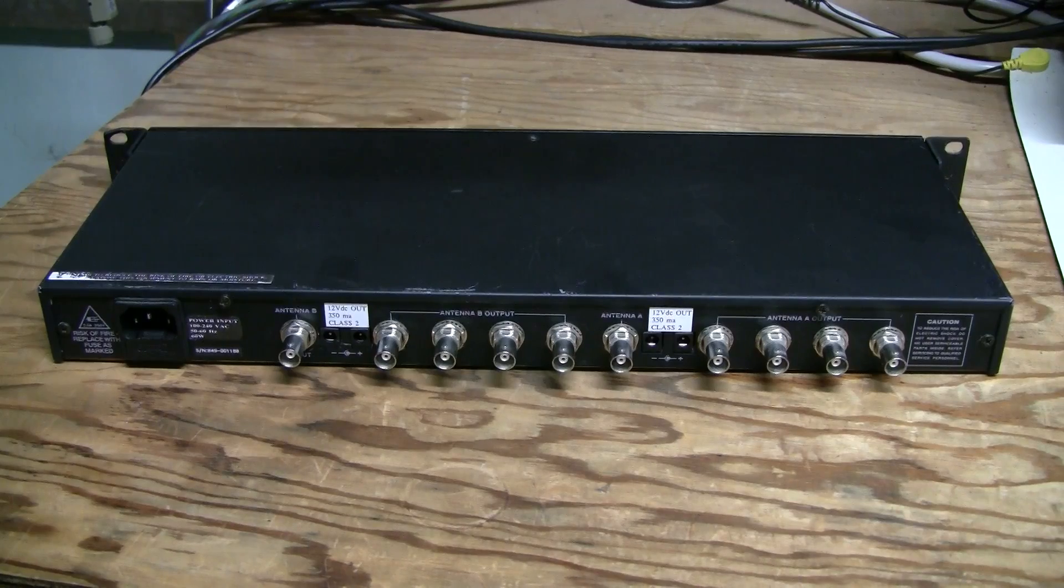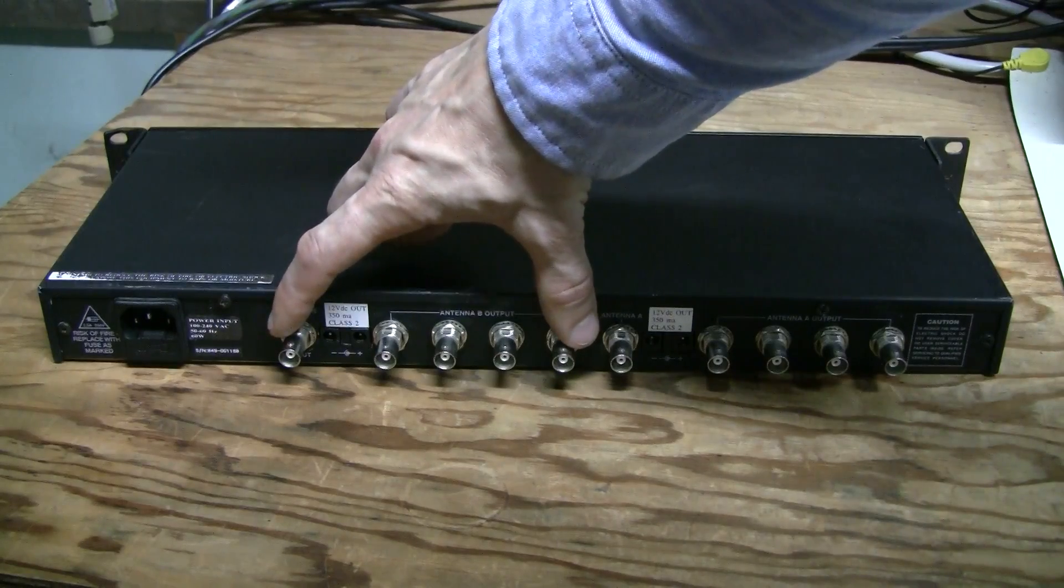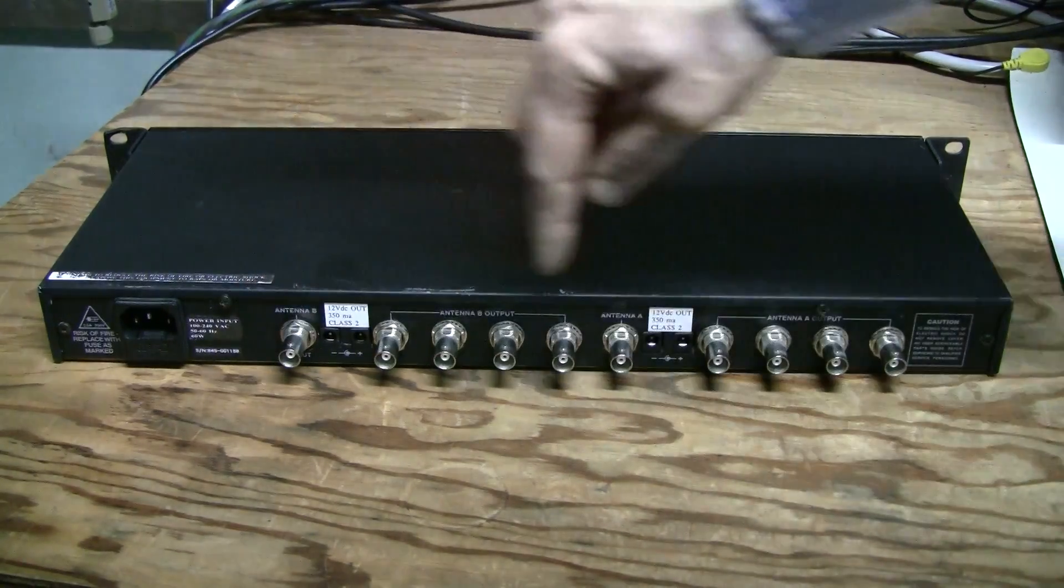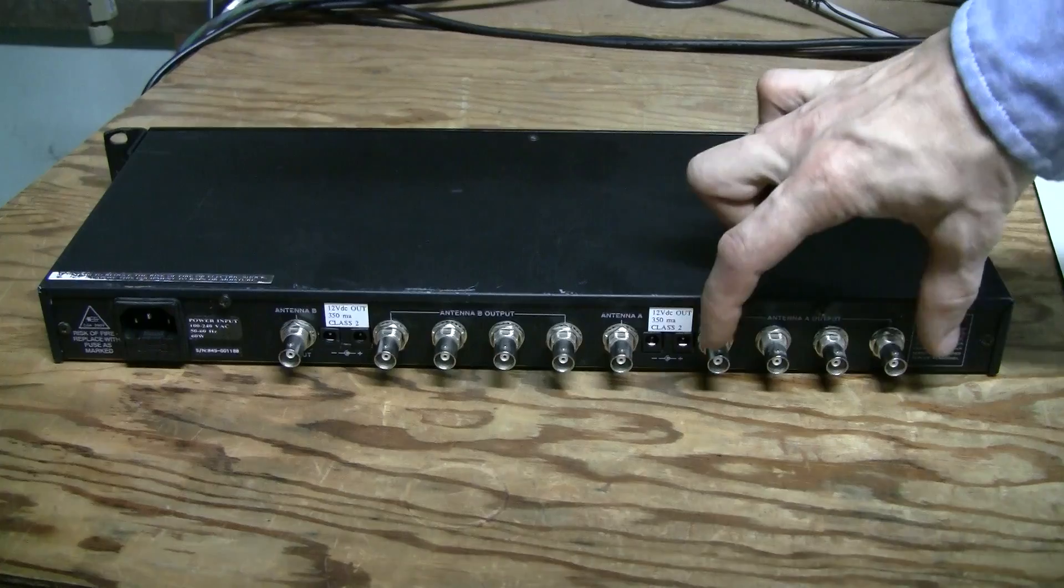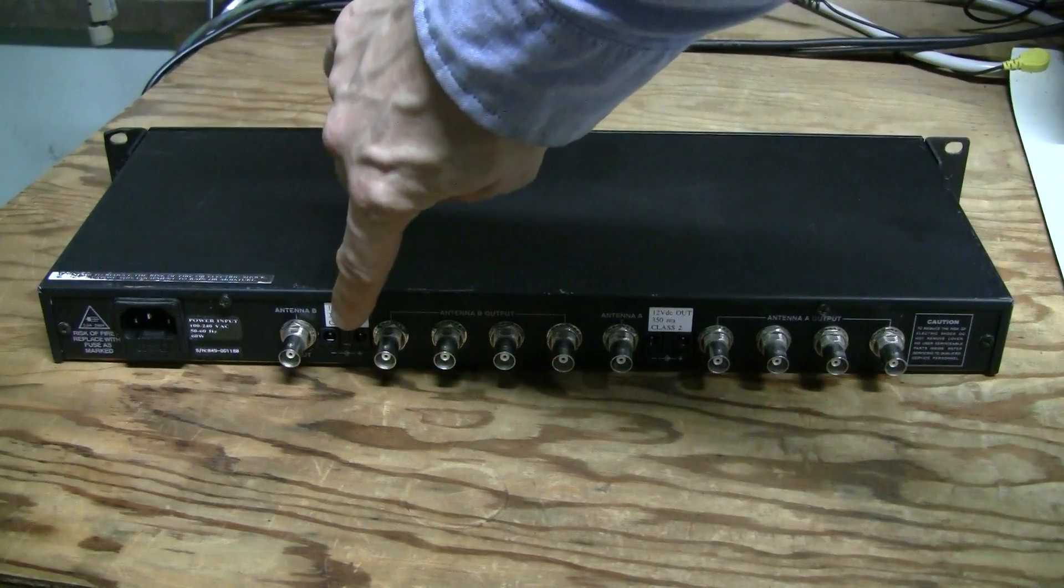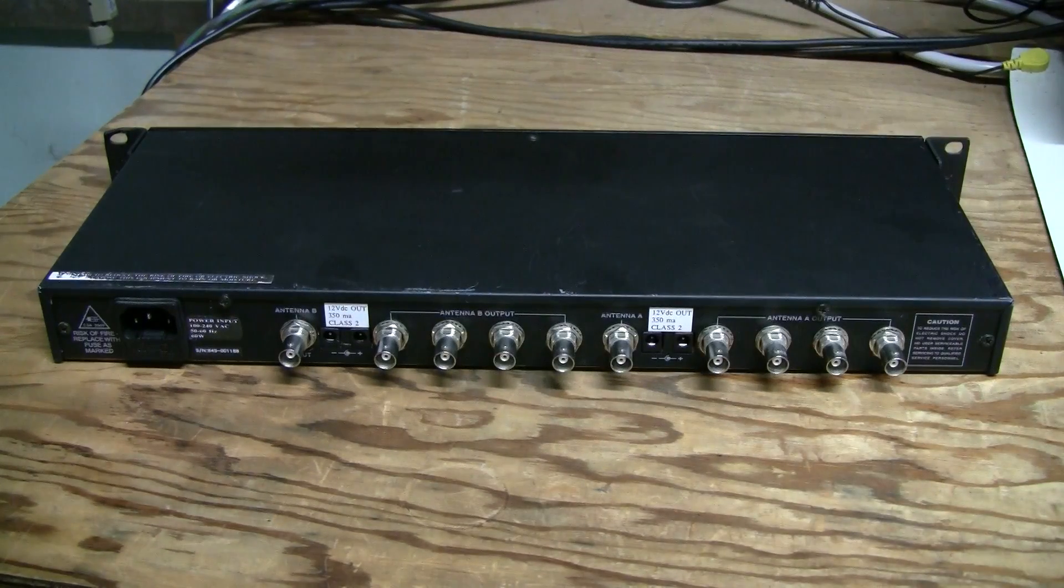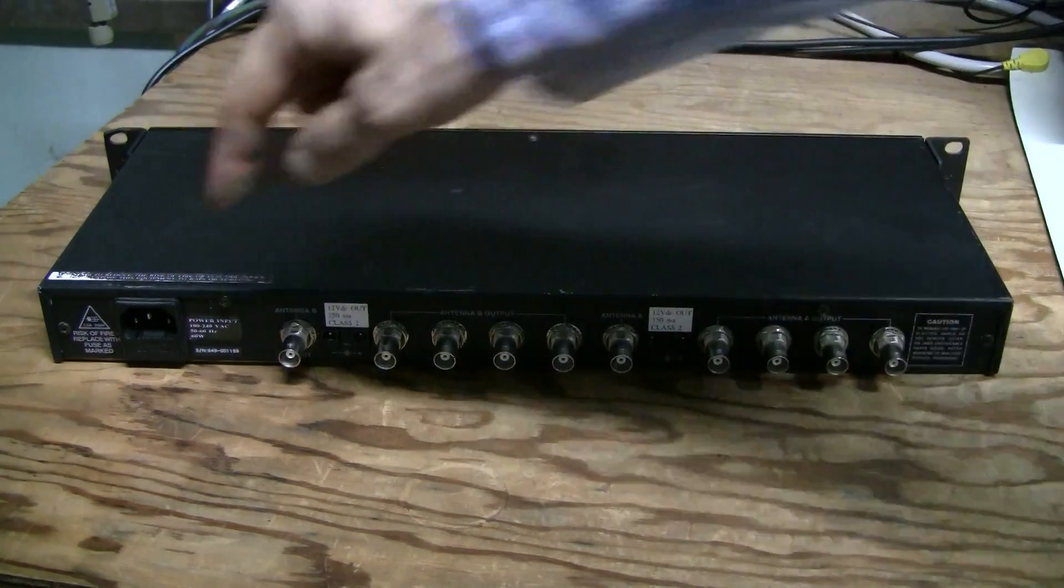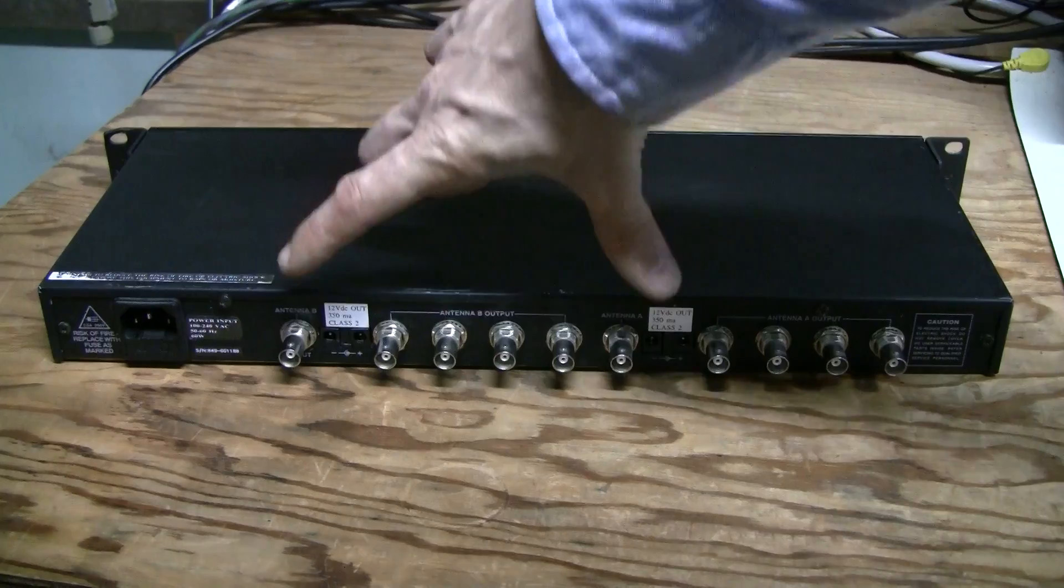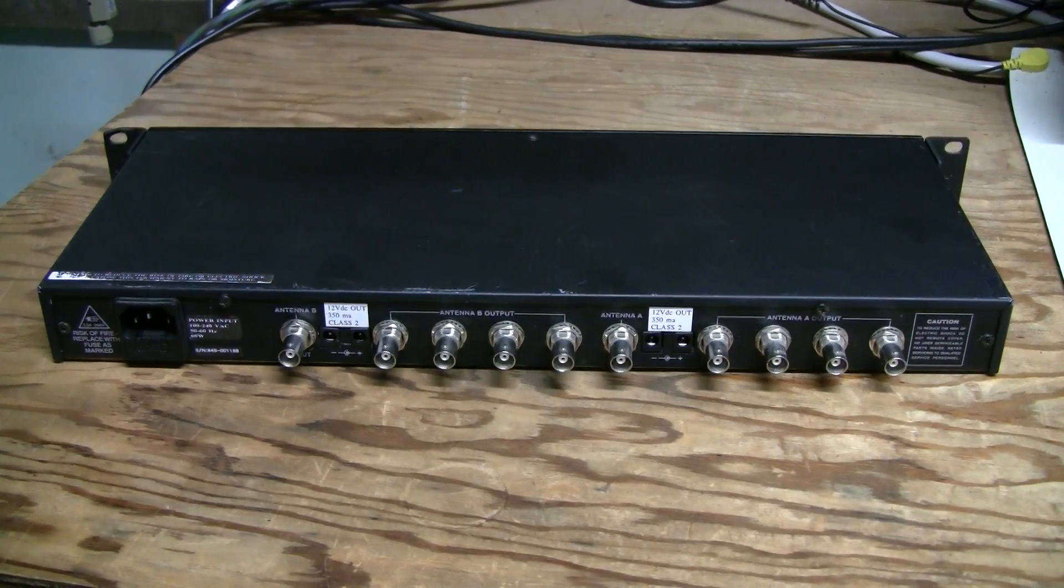Here is the back of the unit. There are two independent channels, channel A here and channel B here. These are antenna inputs and four outputs from each channel. And there are also four outputs from the power supply to replace the power supplies of the receivers. So with just one power cord and two antennas we can connect four receivers and minimize the mess in a rack.